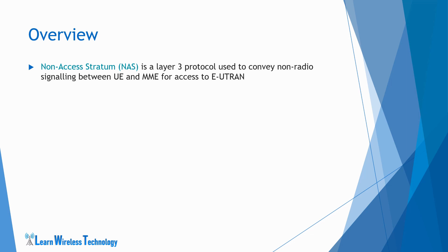The NAS layer, or the non-access stratum layer, is layer 3 of the LTE protocol stack. It is the topmost protocol layer in the LTE control plane stack that deals with the communication between UE and MME. Basically, the non-access stratum is a set of protocols used to convey non-radio signaling between UE and MME for LTE network access.